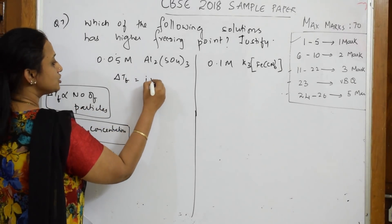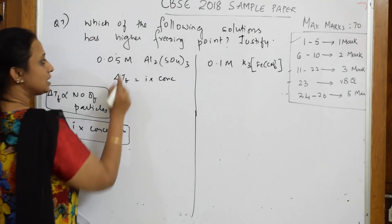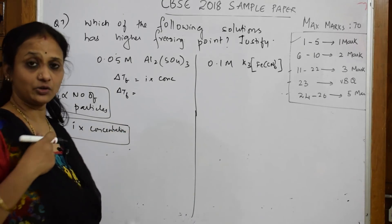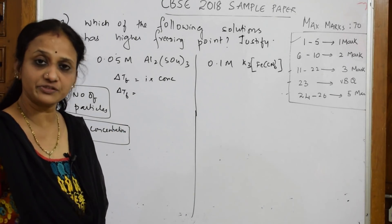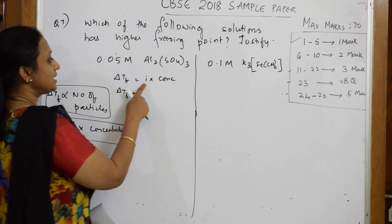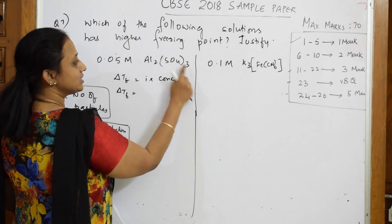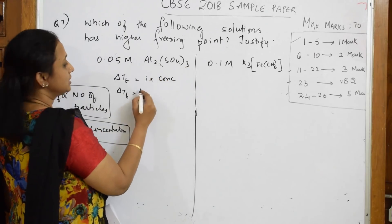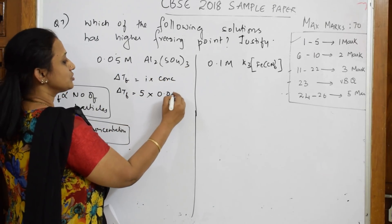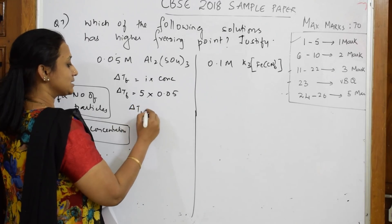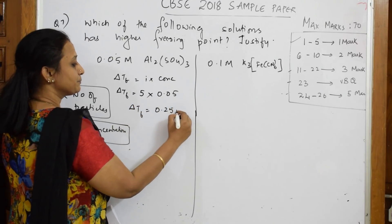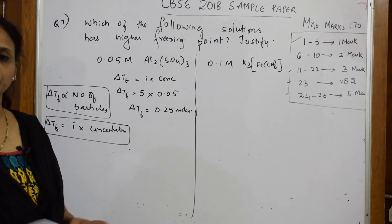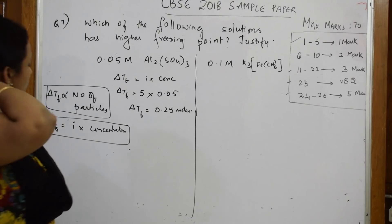ΔTf = i × concentration. What is i? i is the van't Hoff factor. Calculate it here: 3 + 2 = 5, so i = 5. What is the concentration? 0.05. Solving this gives 0.25 moles of ions. So for solution A, ΔTf corresponds to 0.25 moles of ions.